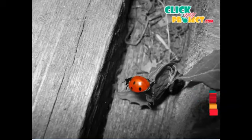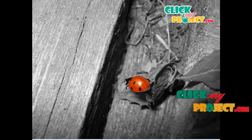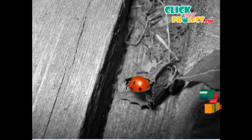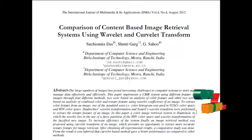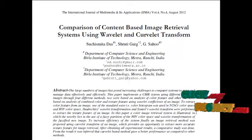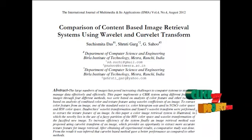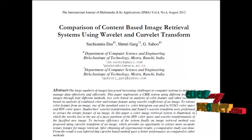Welcome to ClickMyProject.com. Let's discuss the paper: Comparison of Content-Based Image Retrieval Systems using Wavelet and Curvelet Transform. This paper describes a CBIR method for natural images using both Wavelet and Curvelet Transform. Curvelet Transform introduces computational complexity for retrieving the relevant images.